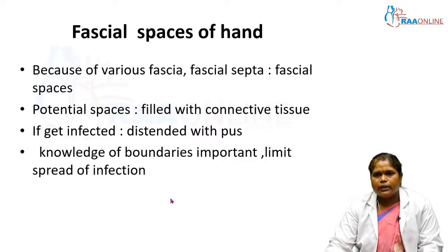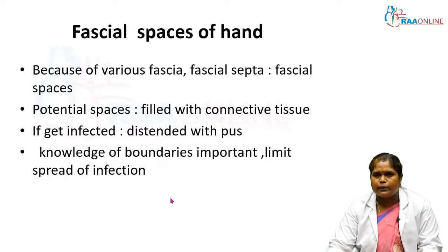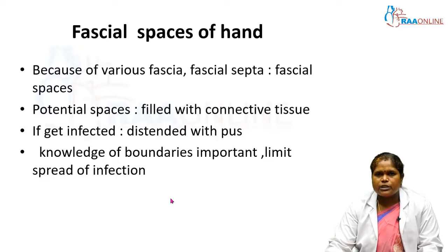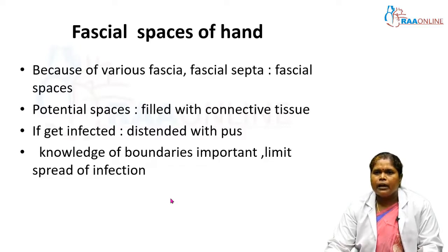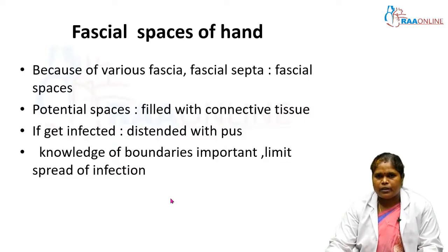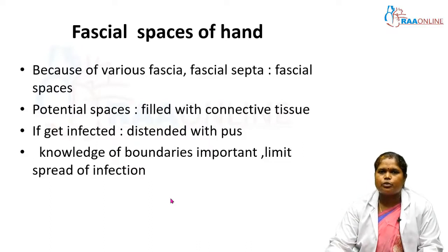We have already discussed about the various anatomy of the hand — the different layers present. We know we have the deep fascia, that is the palmar aponeurosis, in the hand. Because of this fascia and the fascial septa, fascial spaces are formed in the hand, and these are known as fascial spaces of the hand.